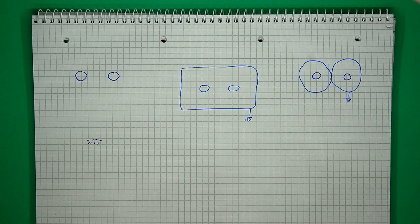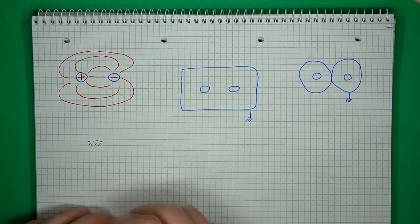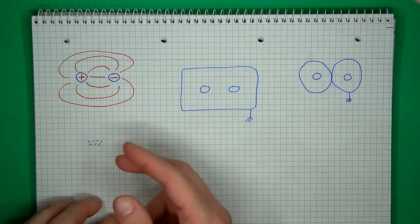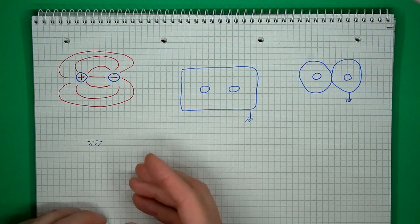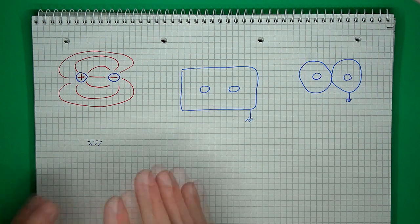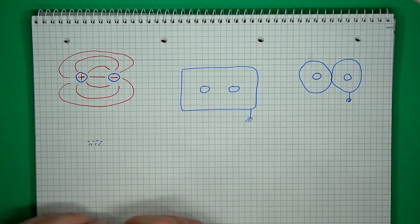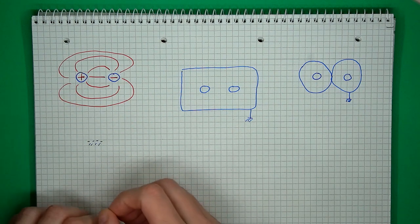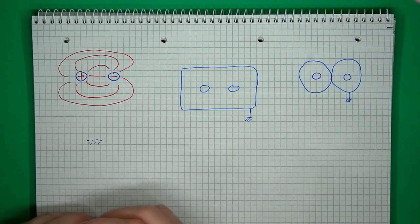Let's start looking at where the differential signal travels with a set of extreme examples. If we consider a cable pair — like a twisted wire or a ladder line — with no ground anywhere near, then all of the differential wave travels in between the two conductors. So nothing special really occurs here.